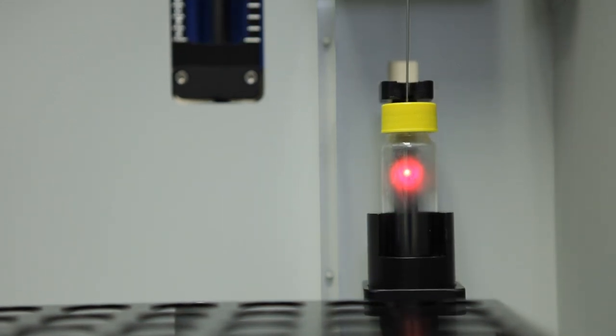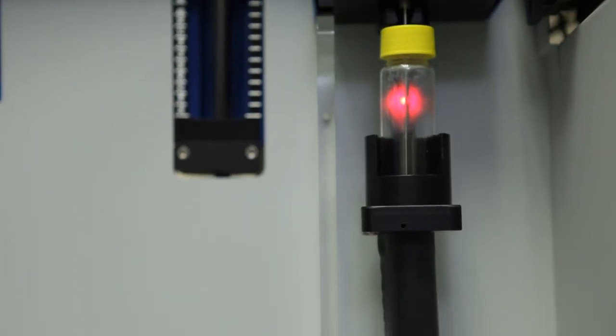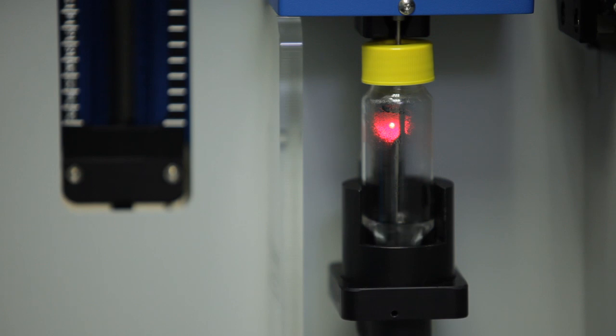Once the SEPTA is pierced, a programmable volume of blank water with the internal standards is added to the vial. Vials are then purged in place and the analytes are transferred directly to the sorbent trap.